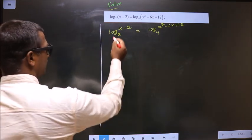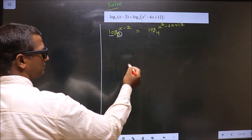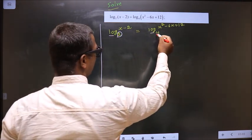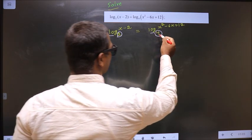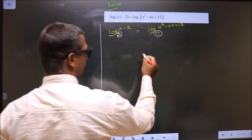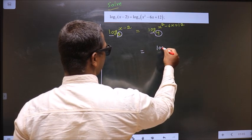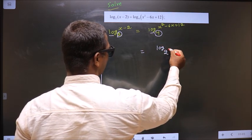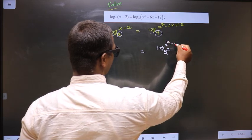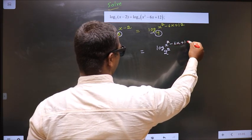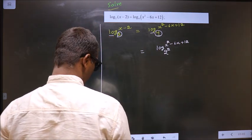Here we have log with base 2 on the left, and log with base 4 on the right. We can also get base 2 on the right by rewriting 4 as 2 squared. To get base 2, I have written 4 as 2 squared.